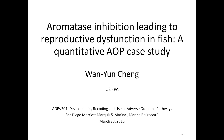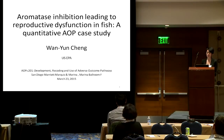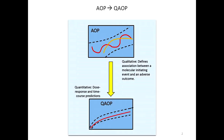Building up from the information from Steve, Ed, and Russell, I'll give a case study for quantitative adverse outcome pathway with aromatase inhibition AOP. Moving from adverse outcome pathway to quantitative adverse outcome pathway, AOP defines association between a molecular initiating event and an adverse outcome. The quantitative adverse outcome pathway is designed to provide quantitative information for dose response and time course predictions.